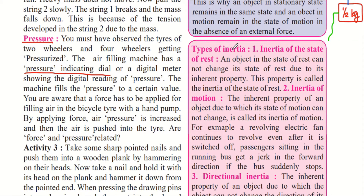There are three types of inertia: inertia of the state of rest, inertia of motion, and directional inertia. They tell us about the different existing states of motion of the body. If the body is at rest initially, it will have inertia of the state of rest. If it is in motion, it will have inertia of motion.